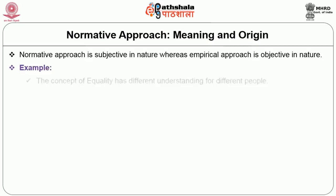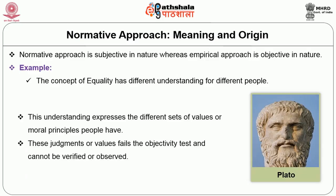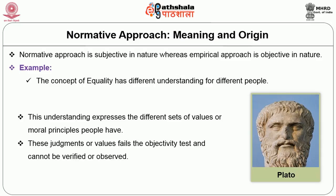For example, the concept of equality has different understandings for different people. For Plato, equality meant voting rights to citizens only, excluding women and slaves. But for feminists, equality means equal rights for all sexes. This understanding expresses the different sets of values or moral principles people have. These judgements or values fail the objectivity test and cannot be verified or observed, hence normative approach lacks scientific validity.